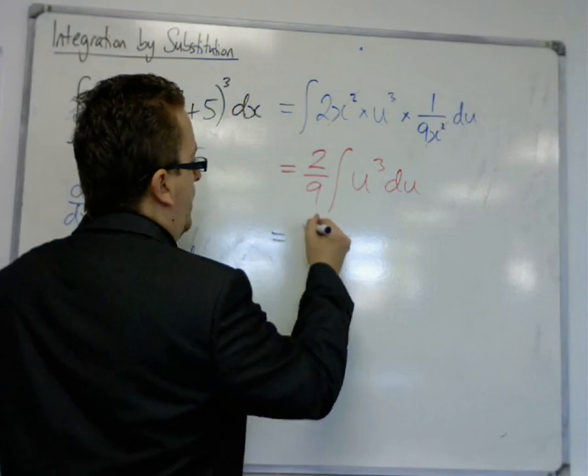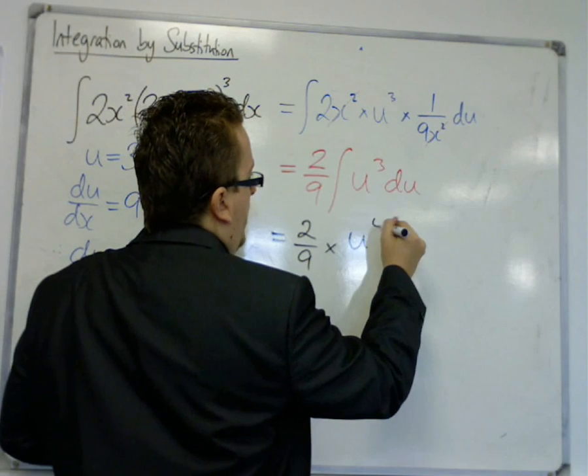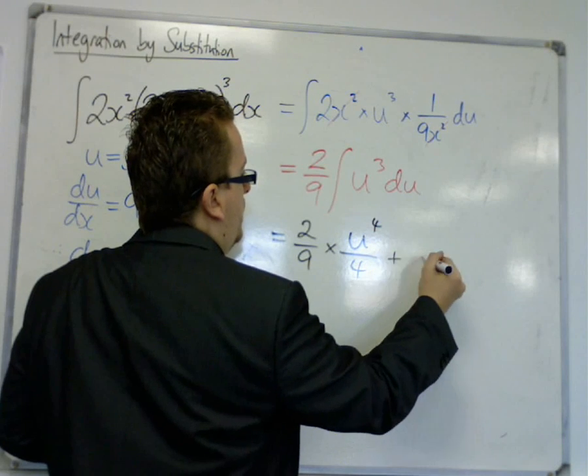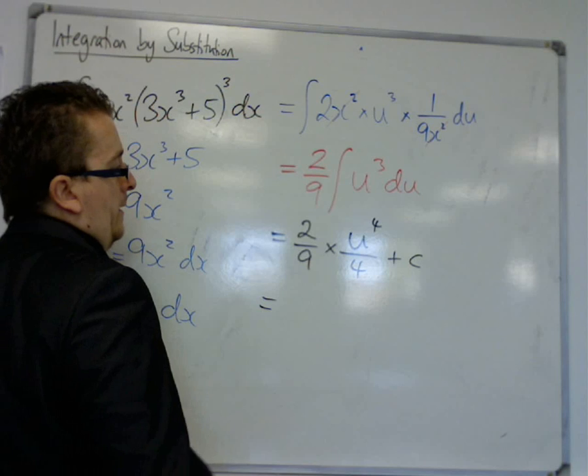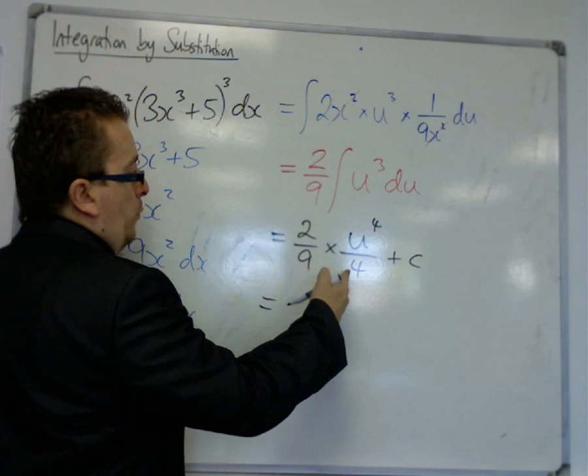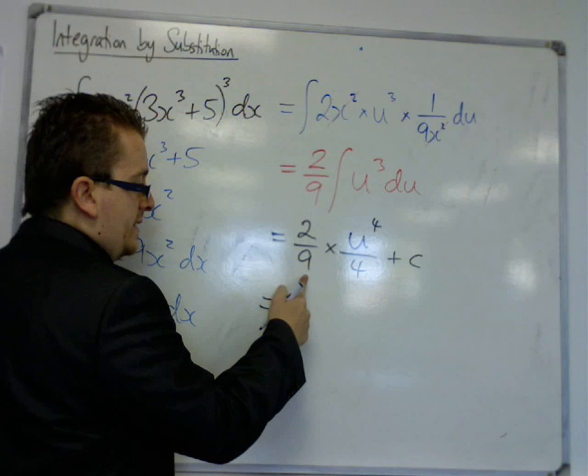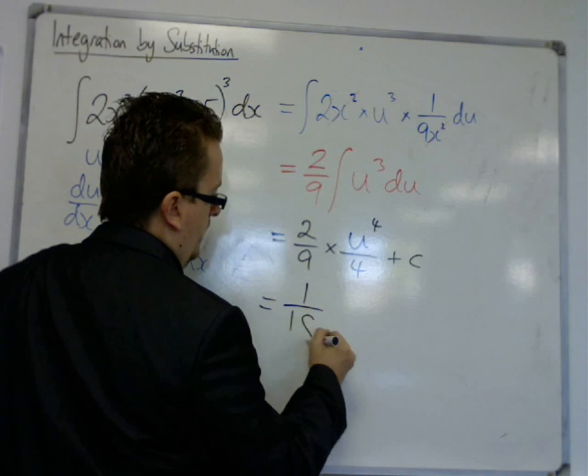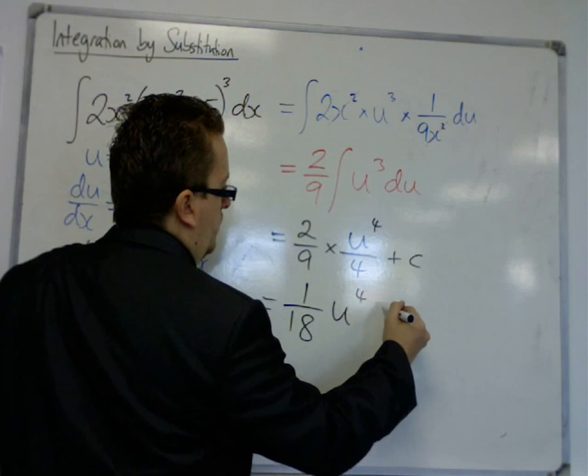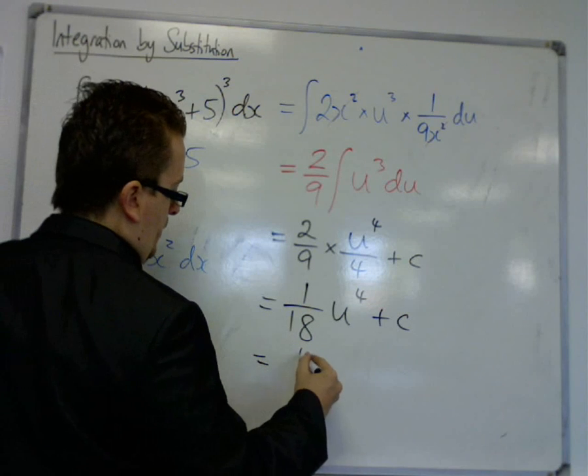So this is 2/9 times by, this is core 1 again, add 1 to the power, divide by the new power, we've got a plus c constant of integration. So that's 2/9 times 1/4, which is 2/36, which is 1/18 u^4 + c, and that u was 3x^3+5.